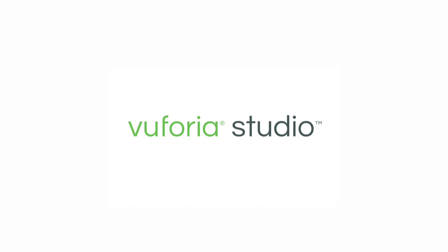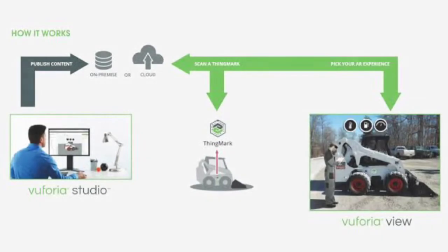So how it works? Here's a small demonstration. We create experiences in Euphoria Studio using JavaScript and then we publish it into the cloud or on-premise depending upon the version we have selected. After publishing, we go to the ThingMark. We can scan the ThingMark and we can see the experiences. Basically the ThingMark is something which segregates all our experiences from each other — it's kind of a link which sorts out from many experiences and pulls out the one which we are needing.